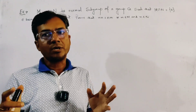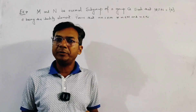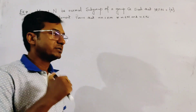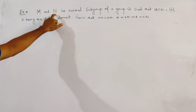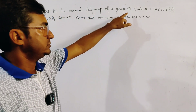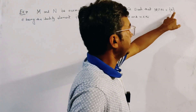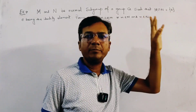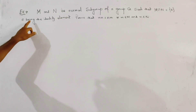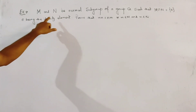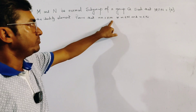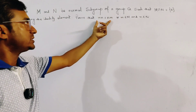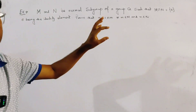This problem is about normal subgroups and the commutativity of elements of two normal subgroups. The problem states: let M and N be normal subgroups of a group G such that M intersection N equals E — that is, the two normal subgroups have only one common element, the identity element. We have to prove that mn equals nm for all m in M and n in N.